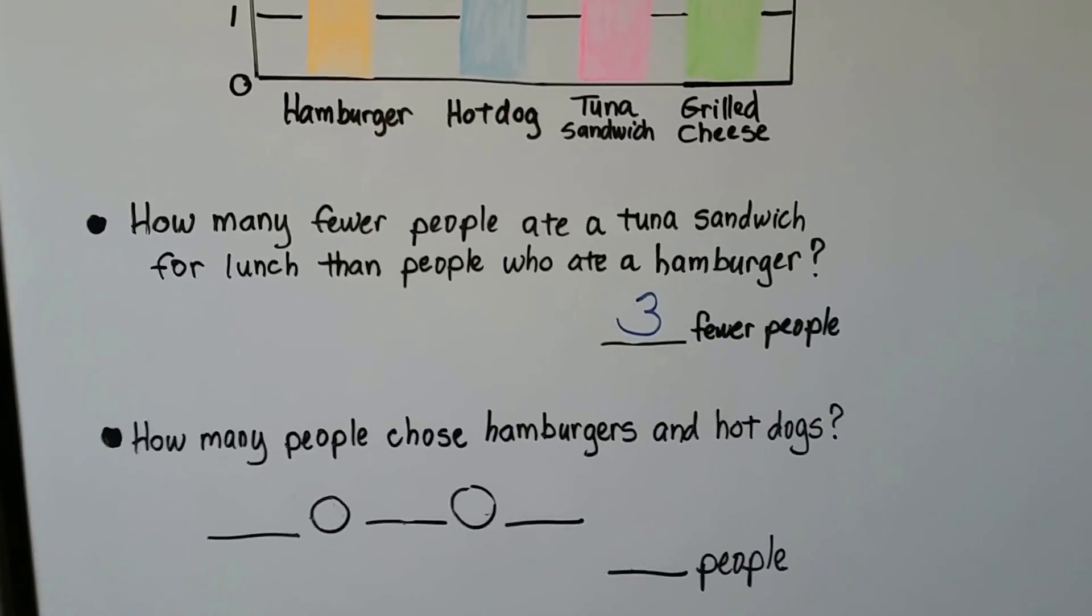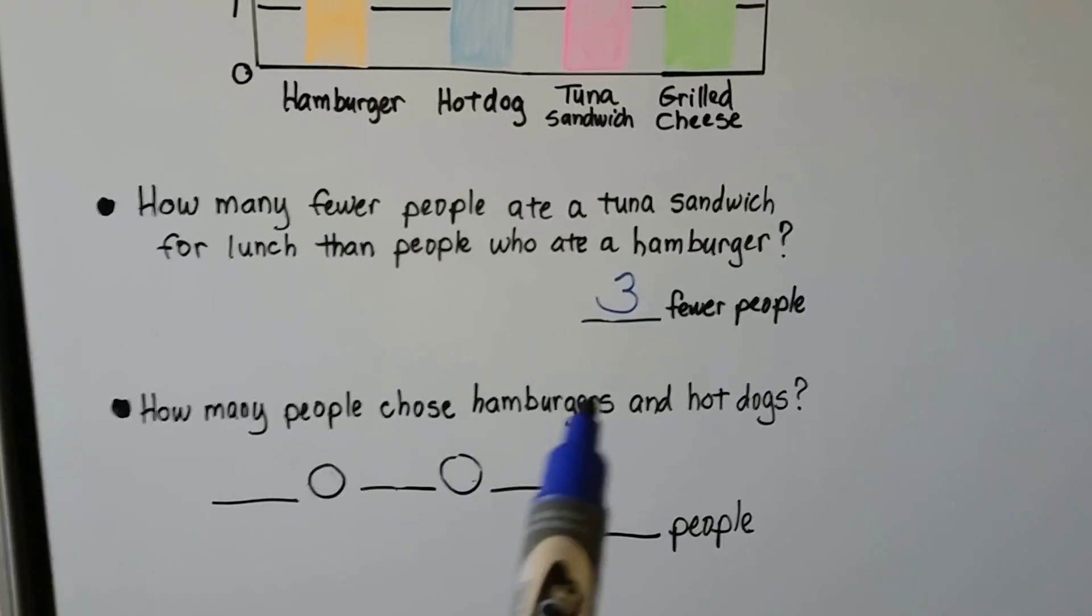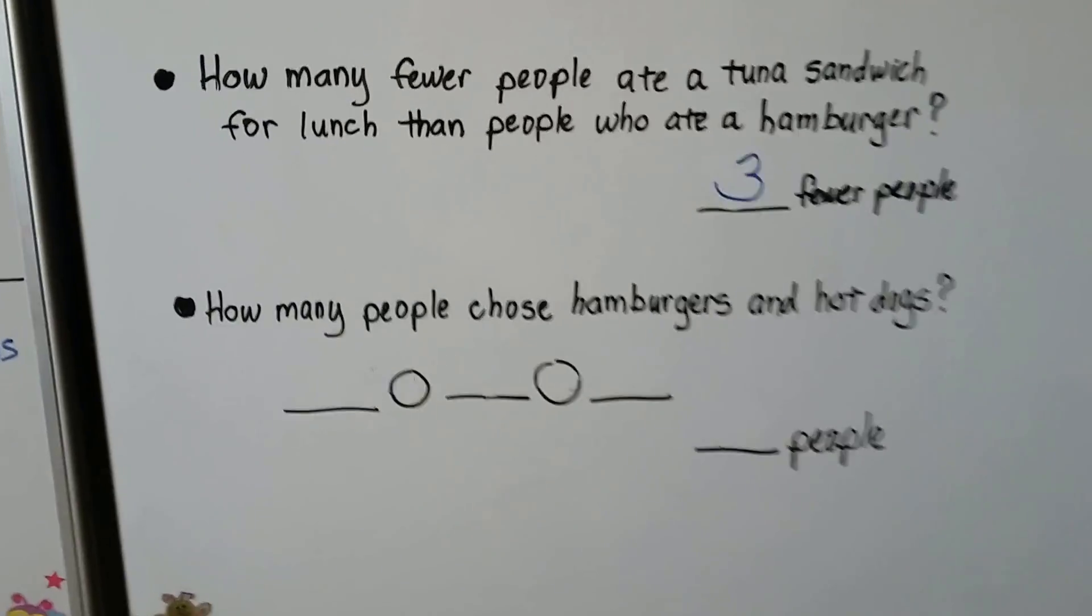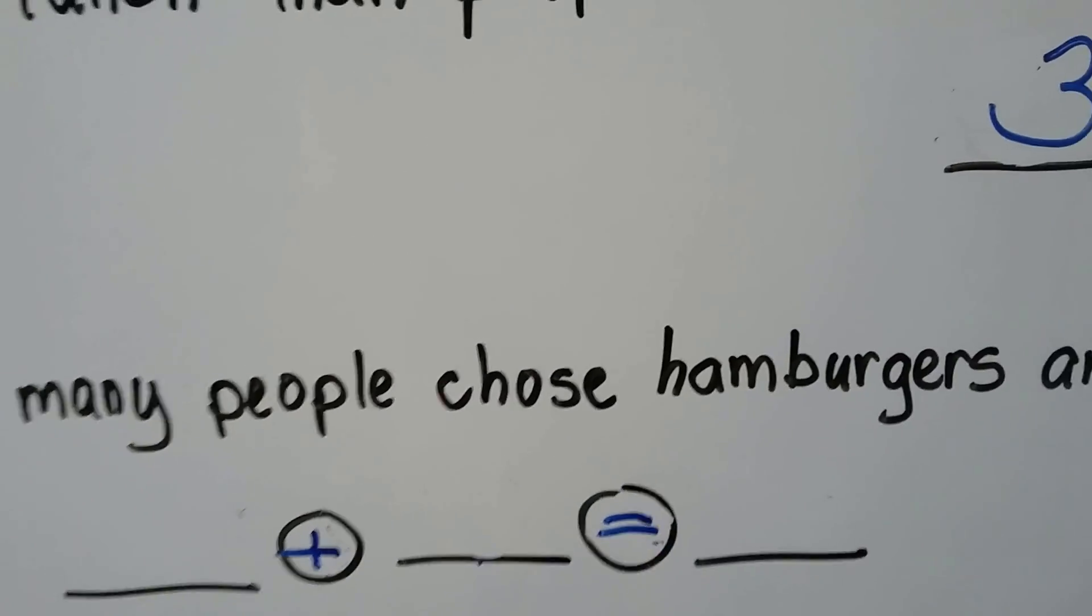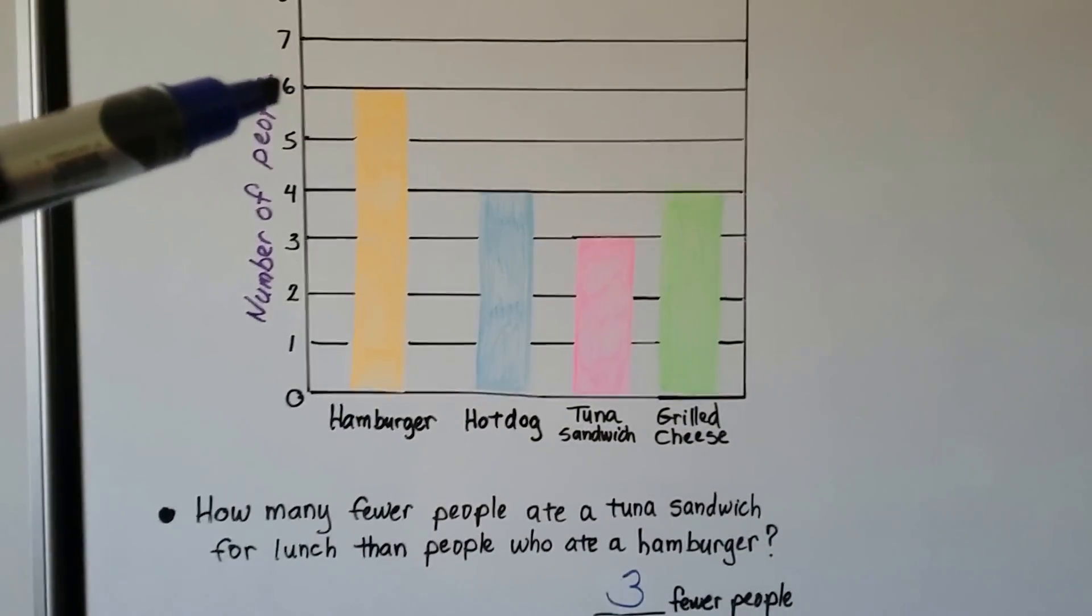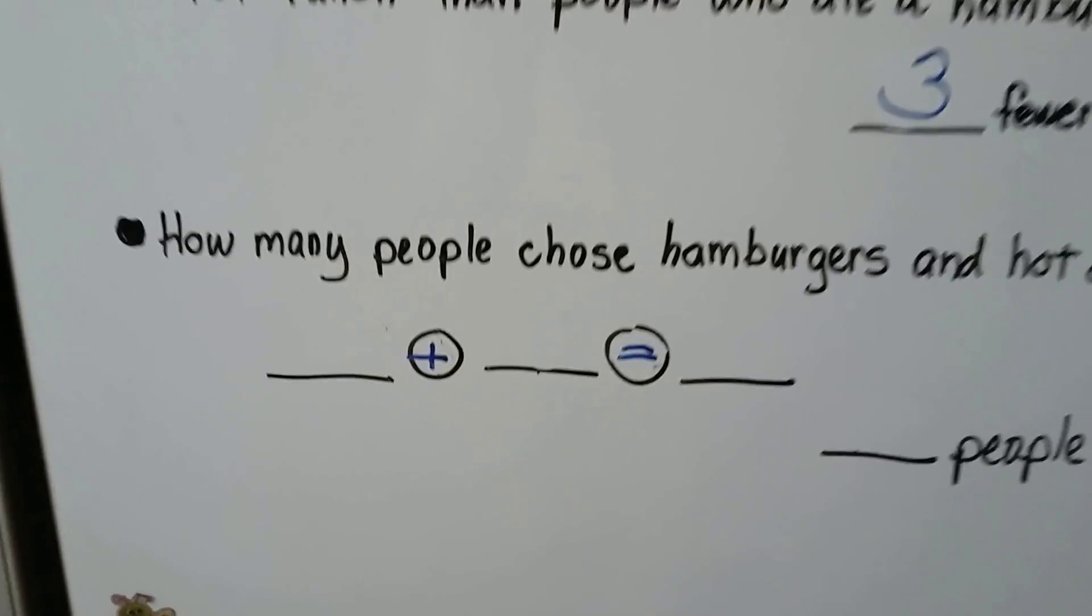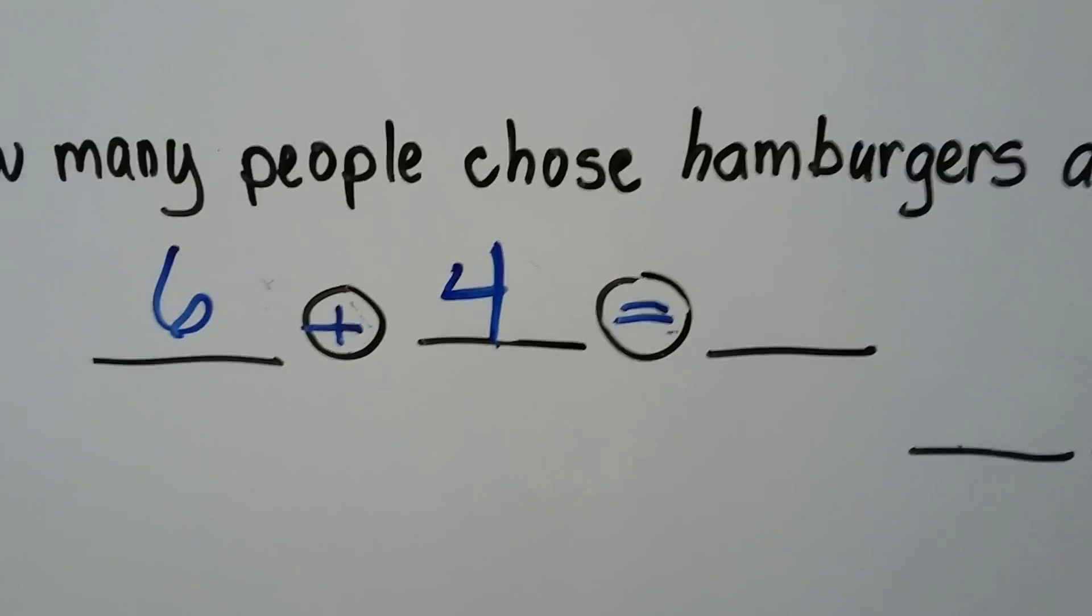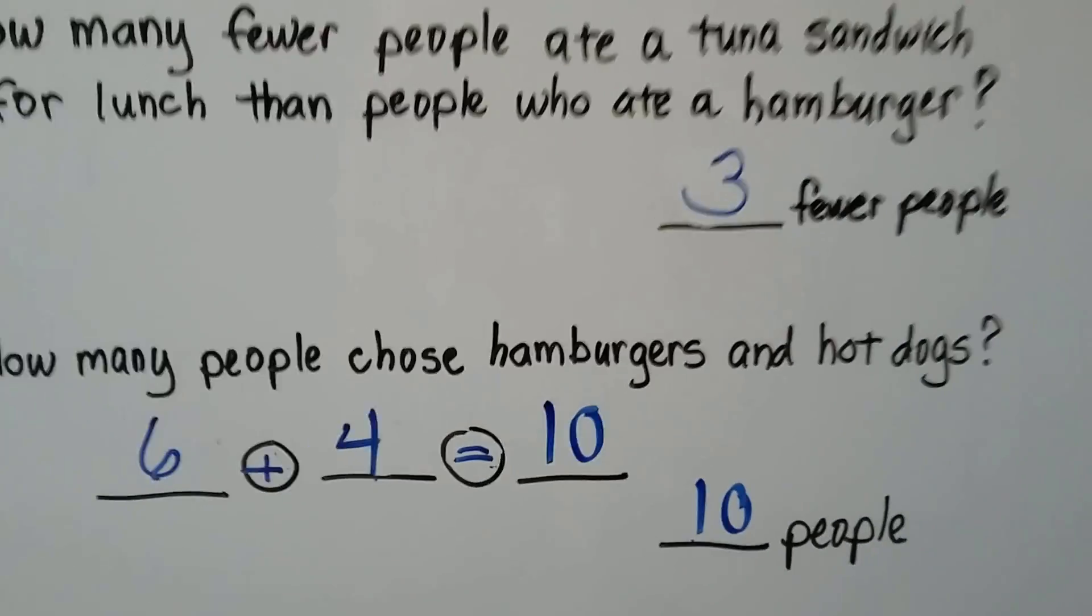So we know three fewer people ate tuna than hamburgers. How many people chose hamburgers and hot dogs? We need to write our number sentence. We see the word 'and'—it wants to know the combined number together. That means we're doing an addition sentence. We look at the number of hamburgers. We follow the bar. It's a six. And hot dogs, we follow the bar. It's at a four. So we're going to add six plus four. Do you know what that is equal to? If you said ten, you're right. That means ten people chose hamburgers and hot dogs together.